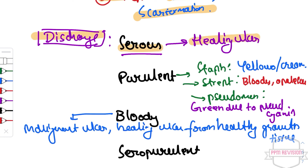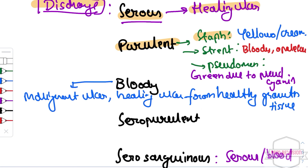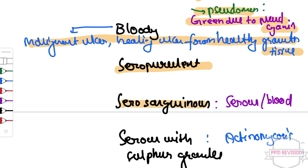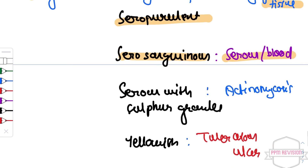To summarize discharges: serous is from healing ulcer; purulent is from staphylococcus (yellowish-cream), streptococcus (bloody and opalescent), and pseudomonas (greenish, due to pseudocyanin). Bloody is from malignant ulcers and healing ulcers from granulation tissue. Serosanguinous is serous and blood. Serous with sulphur granules is actinomycosis. Yellowish is tuberculous ulcer.